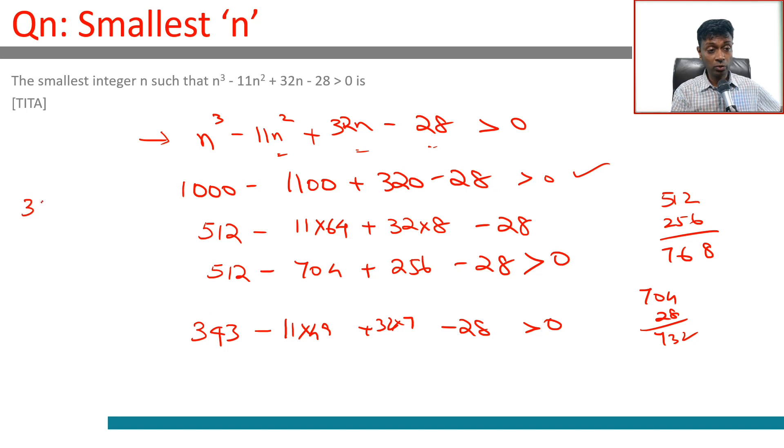So 343, 539, 28. 32 × 7 is 224. So 343 + 224, that's 567. 539 + 28, that's 567.